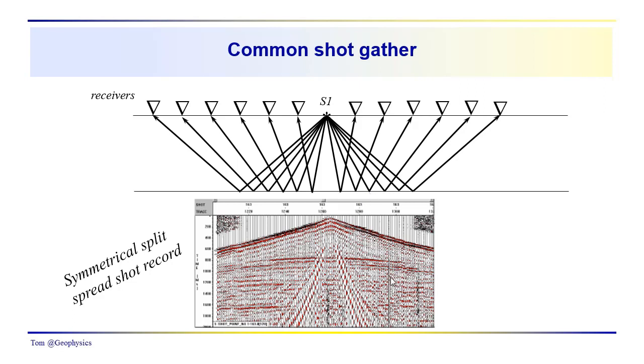So I would ask you, maybe to pause the video and look at this record here. Can you identify all the events that you see in this shot gather or this shot record? So, having taken a moment, I think you can see we have what we might classify as a refraction, critical refractions here in the shallow surface. They do appear to increase in velocity with offset, and that may be due to some lateral variation in velocity as we go away from the source.